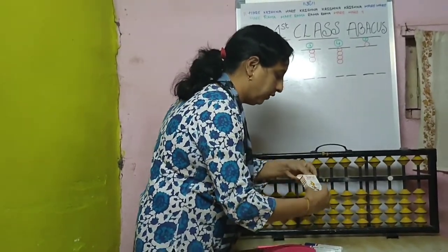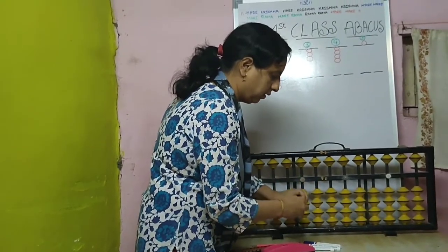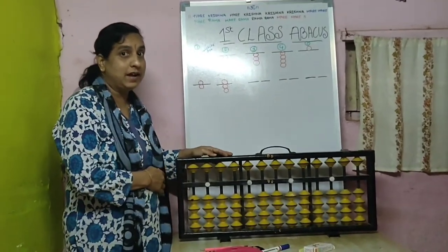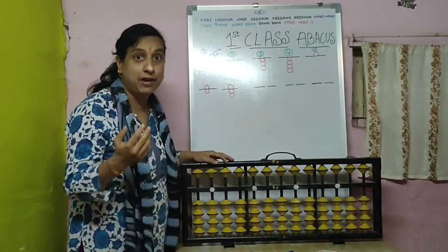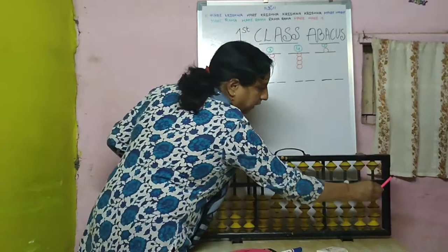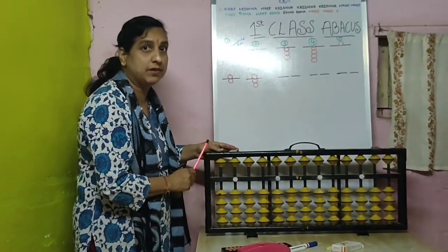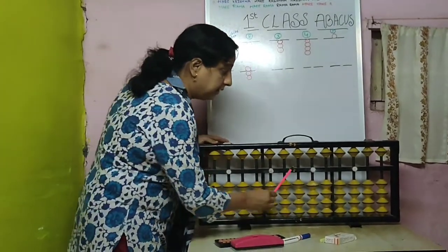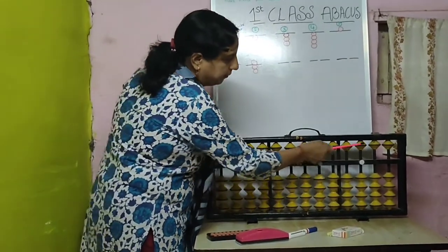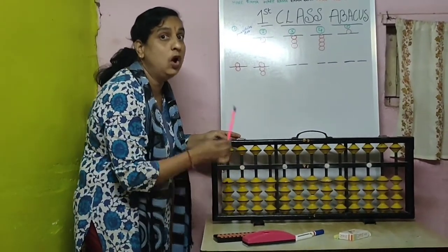I will do some white dots here. So whatever I have explained to you last time, I will explain again. Once again we will revise it. This is the frame of the Abacus — all of you are remembering, isn't it? This is the divider, these are upper beads, these are lower beads, and these white dots are the home point.